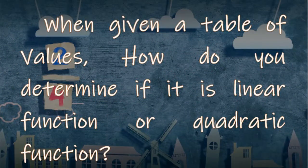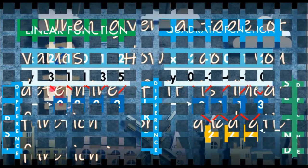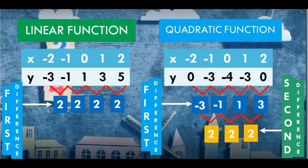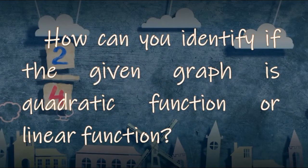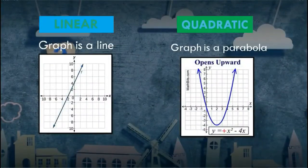When given a table of values, how do you determine if it is a linear or quadratic function? If the first differences are all the same, that is a linear function. But when it comes to quadratic function, the second differences are all the same. If the given graph is a line, that is a linear function. But if the given graph is a parabola, therefore that is a quadratic function.